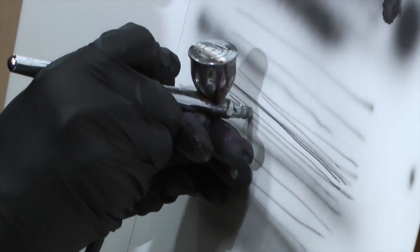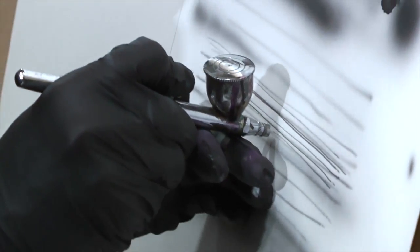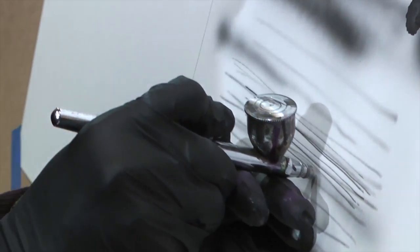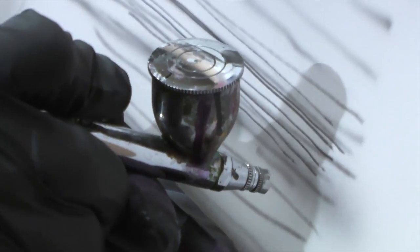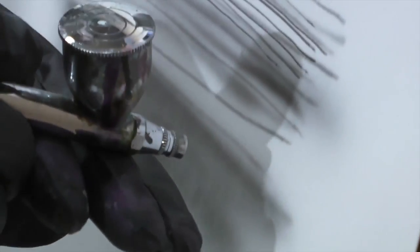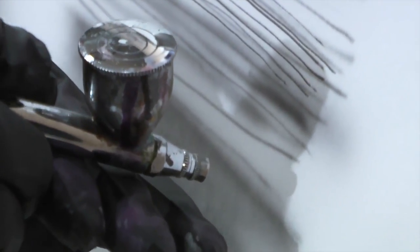For thinner lines: push down for air and do not pull back as far on the trigger, and be closer to the paper. I'm barely pulling back and I'm getting these super fine lines. Then the further you pull... for wider lines, the further you pull back, the more you need to be away from the paper and the slower you need to go.